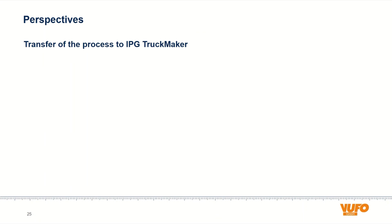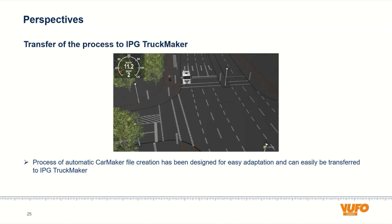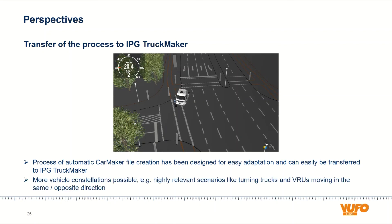One of our main perspectives is to transfer the process to IPG Truckmaker. The process of automatic CarMaker file creation has been designed for easy adaptation and can easily be transferred to IPG Truckmaker. Then even more vehicle or accident constellations would be possible. Especially highly relevant and critical scenarios like turning trucks and vulnerable road users moving in the same or opposite direction could be simulated. This could contribute further to our main goal of avoiding accidents.